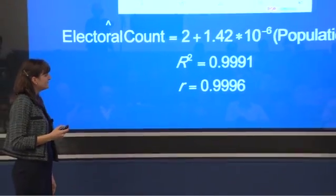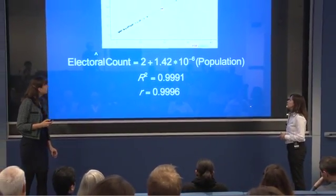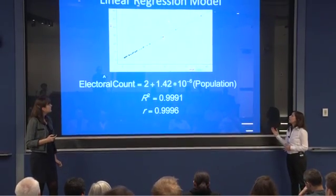We also used Fathom to create a linear regression model. Fathom is a program from Key Curriculum Press — it's like the stats version of Geometer's Sketchpad. This takes the data on the cards and organizes it differently: population in millions on one axis and the electoral college number on the other. The red dot is New York. If you're teaching integrated algebra, you can simply note it's a positive, strong, linear relationship with R = 0.9996. The linear model the program produced is: expected electoral count = 2 + (1.42 × 10⁻⁶) × population.